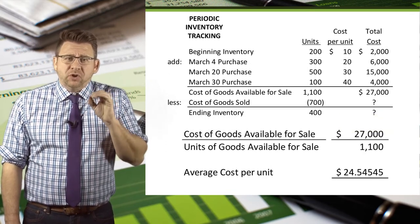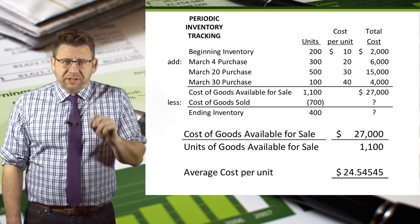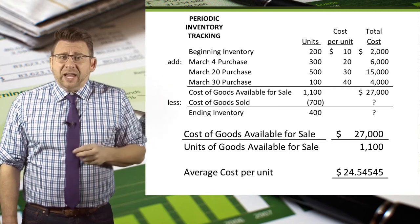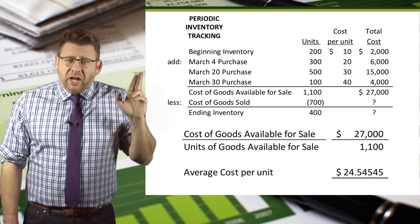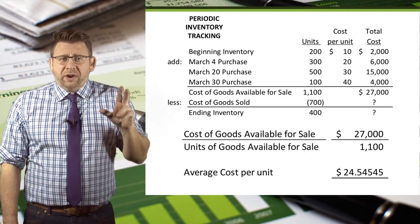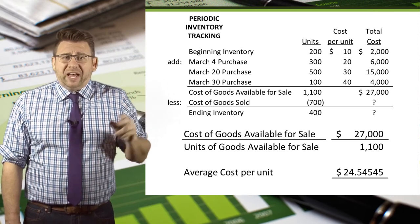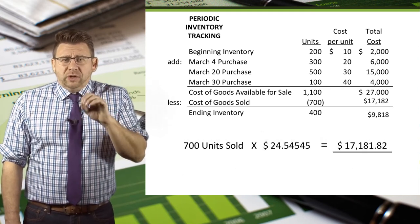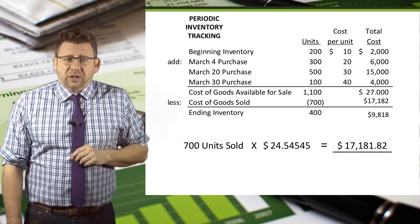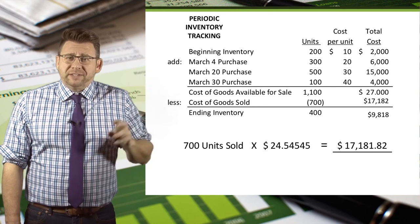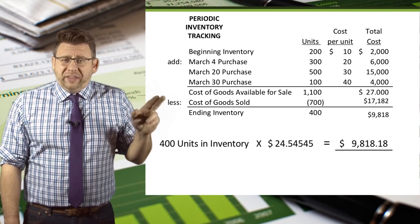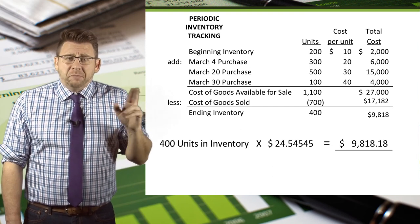With this method, we take the cost of goods available for sale and divide it by the number of goods available for sale, giving us a weighted average cost per unit. In this case, we take $27,000 and divide it by 1,100 units, arriving at an average cost of $24.54545. It's common when using average cost to carry the decimal out to 4 or 5 decimal places. We then multiply the units sold by the average cost to arrive at cost of goods sold of $17,182. The difference between cost of goods sold and goods available for sale is the ending inventory value of $9,818. We can also prove the ending inventory amount by multiplying the 400 units of ending inventory by the average cost.